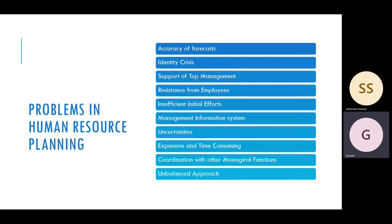The fourth problem is resistance from employees — employees have trade unions, and the majority of employees may resist the human resource planning process.